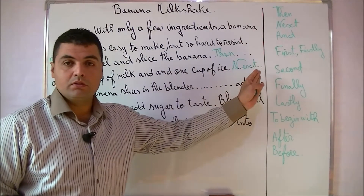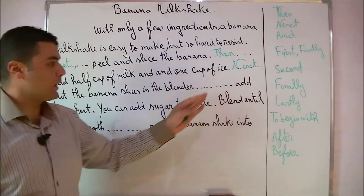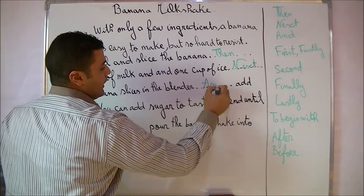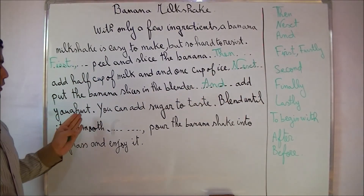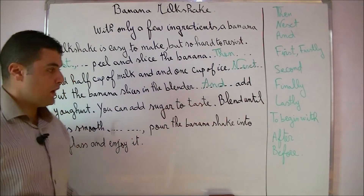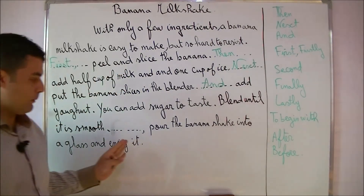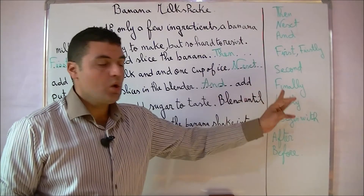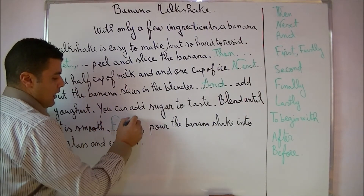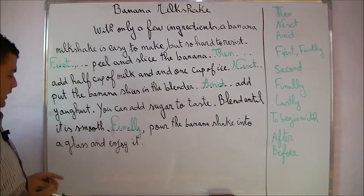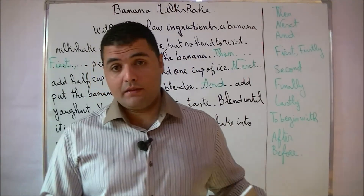We can use 'first, then, second, third' if you want, but here we use 'first,' 'then,' 'next,' and also 'and.' So: 'And add yogurt — you can add sugar to taste — blend until it is smooth.' For the last step we say 'finally' or 'lastly.' So: 'Finally, pour the banana shake into a glass and enjoy it.'